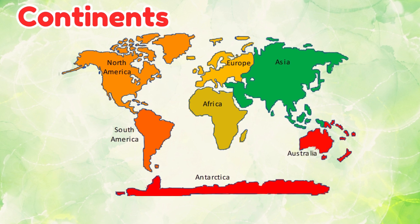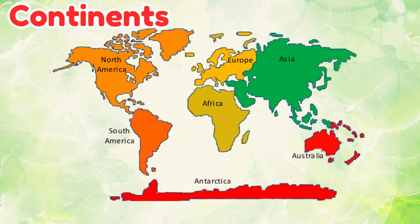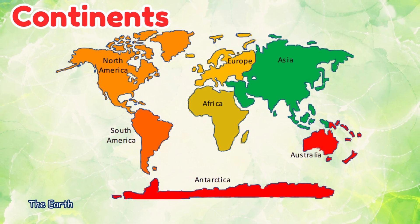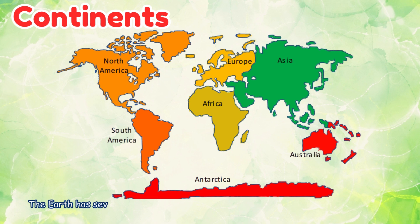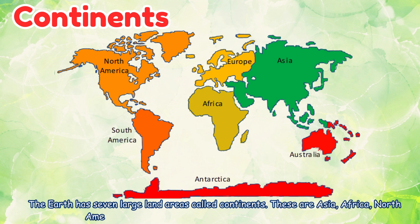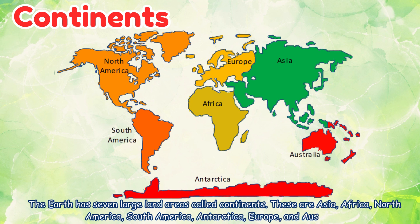Continents. The Earth has seven large land areas called continents. These are Asia, Africa, North America, South America, Antarctica, Europe, and Australia.